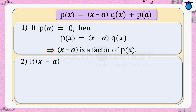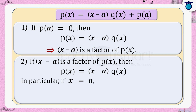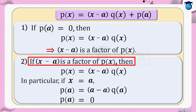Conversely, if (x − a) is a factor of p(x), then p(x) = (x − a) × q(x). In particular, if x = a we get p(a) = (a − a) × q(a), so p(a) = 0. That is, if (x − a) is a factor of p(x) then p(a) = 0.